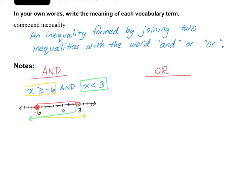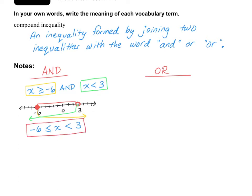Another way to write this — whenever you have an AND — you can write it a little differently. You put the lowest number, which is negative 6, and say negative 6 is less than or equal to x, and then x is less than 3. Negative 6 is less than or equal to x is the same as x greater than or equal to negative 6. And x less than 3 is the same as before. It makes it easier to combine them together as one larger answer instead of separating them out.